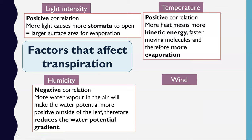Humidity has a negative correlation: the more humid the air surrounding the leaf, the slower the rate of transpiration. The explanation is that more water vapour in the air makes the water potential of the air more positive compared to the inside of the leaf, thereby reducing the water potential gradient and the ability for water to evaporate out.